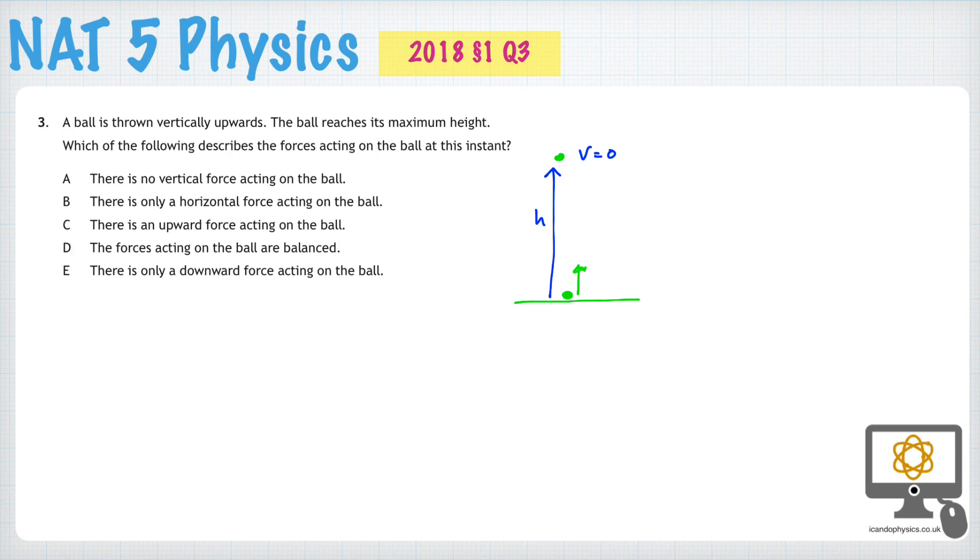So the question is, does the ball have any forces acting on it at that point? Well if it didn't have any forces acting on it, it would just stay there. So there has to be a force. There has to be a downward force due to gravity, the force of gravity or weight as we would normally call it, acting downward at that point in time.